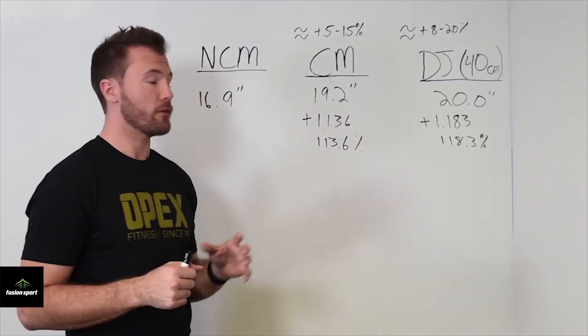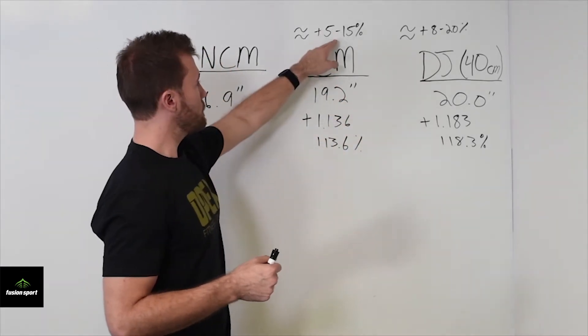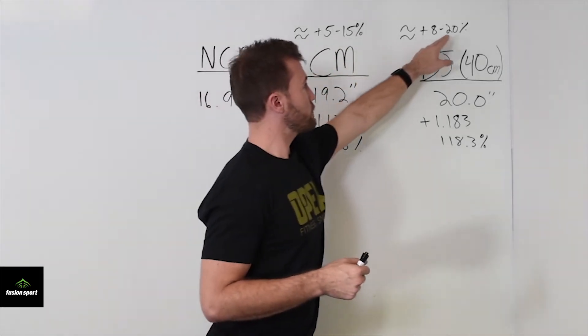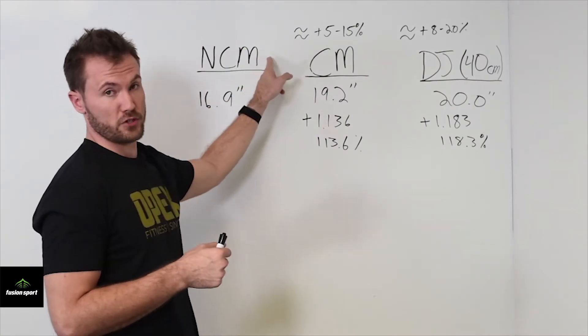Alright, so now that we've done the math, we have James' results. Now we know that for sport, people should be somewhere between 5 to 15 percent higher for their counter movement jump and 8 to 20 percent higher for their depth jump in respect to the non-counter movement jump.